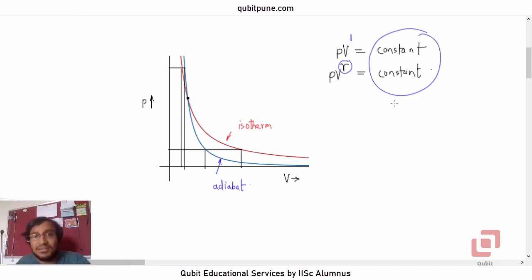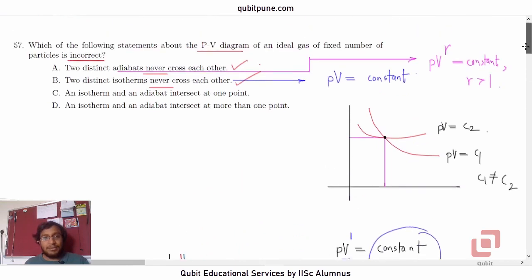It does not matter whether these constants are equal or unequal. That is not of any concern to us. Even if they are equal, they are going to intersect once. Even if they are unequal, they are again going to intersect only once. We can come up with the relationship between those constants by picking or assuming the coordinates which satisfy both the equations. So, they will never intersect multiple times.